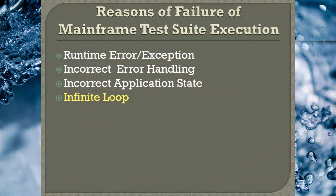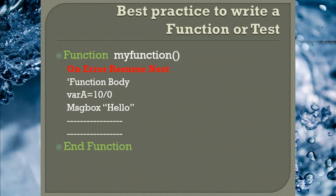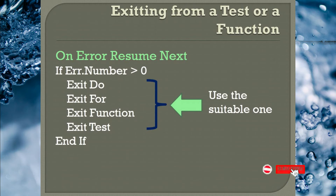If you have written any function to navigate to required screens, always ensure you are pressing the Escape key followed by the F3 key to unlock and exit from the currently open screen. The last reason is infinite loop — you might have written a loop that never exits. Best practice: always write the 'On Error Resume Next' statement at the top of your function or test script so that if any runtime error or exception occurs, it is suppressed and the script can proceed. When using 'On Error Resume Next', an error number is generated and can be accessed via 'Err.Number'. You should always exit from your test, function, or action when such a runtime error occurs.